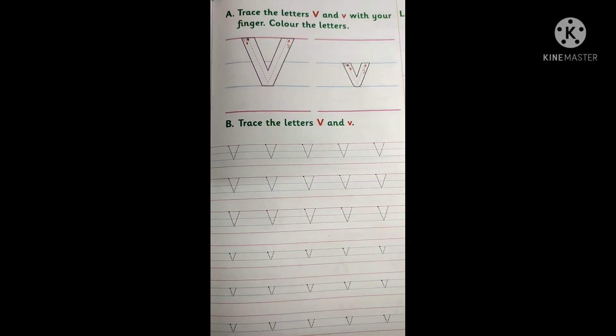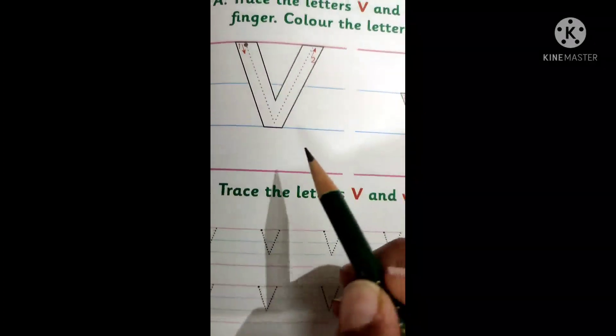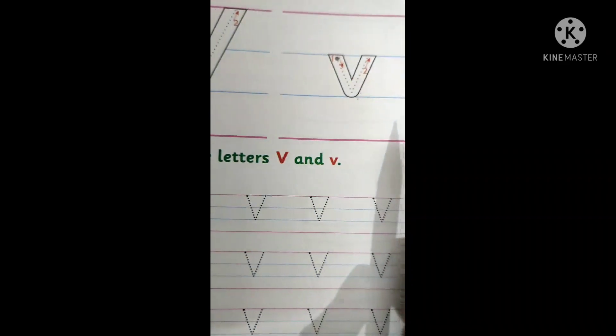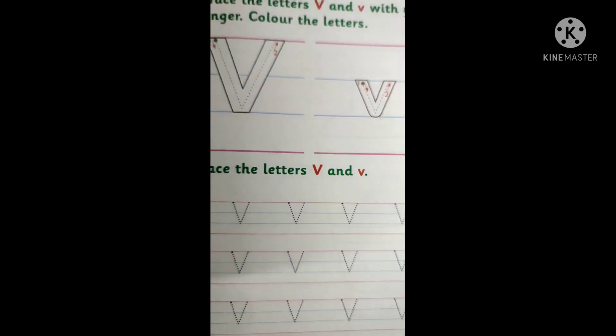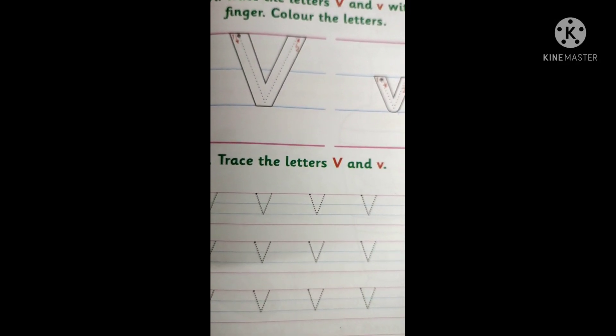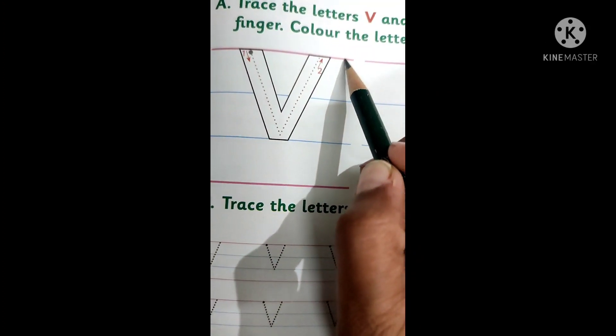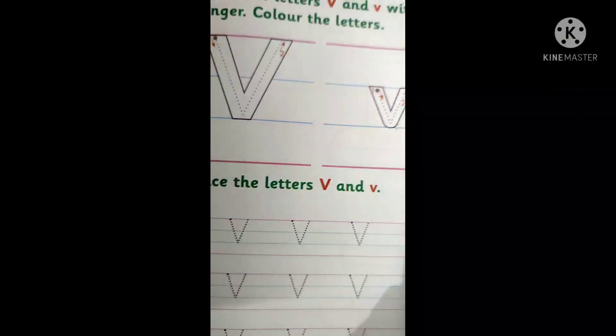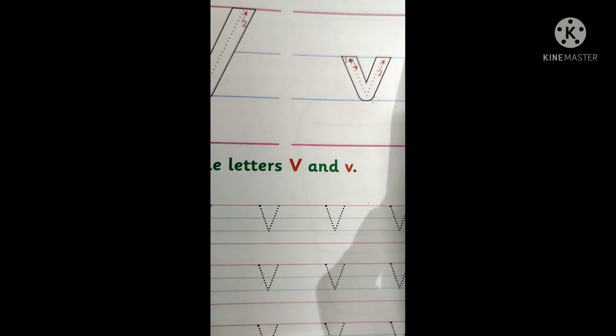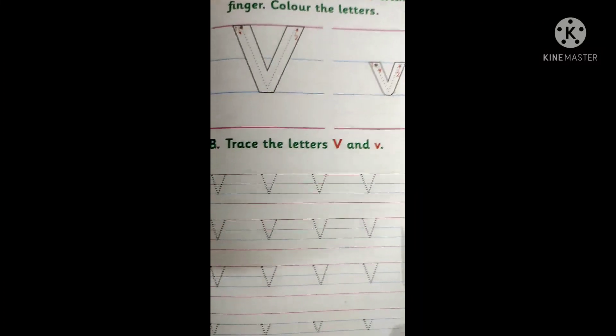Now let's see how to write letter V. This is capital V and this is small v. Both are same. The only difference is we will start capital V with first line and we will start small v with second line. So let's start.